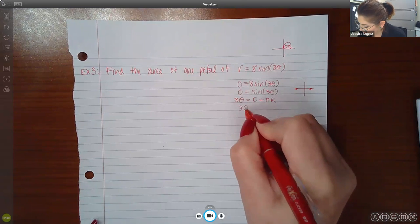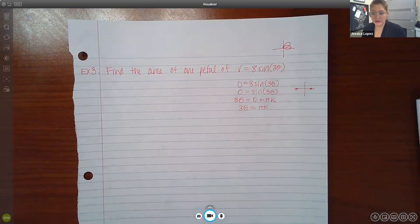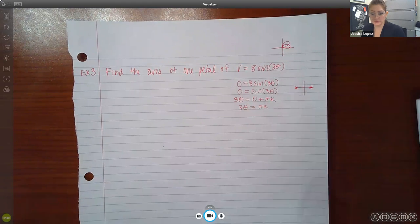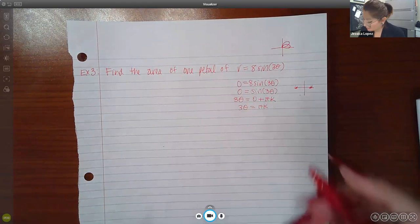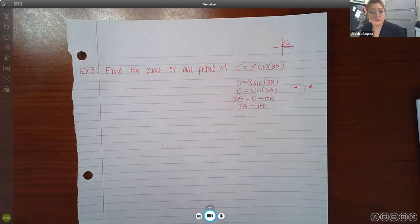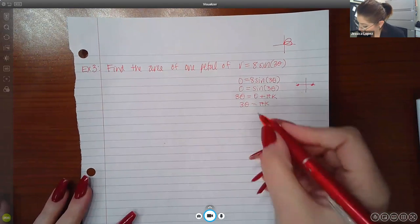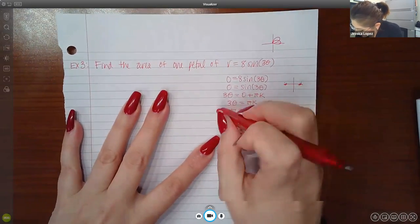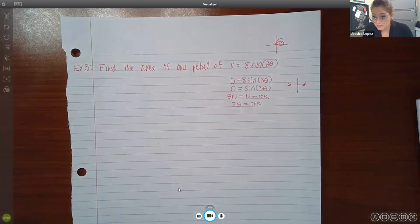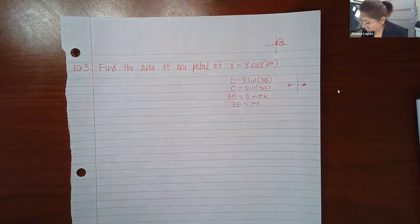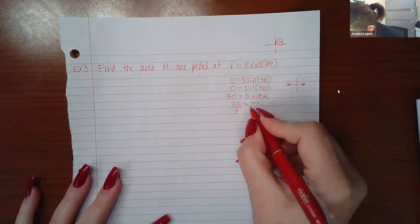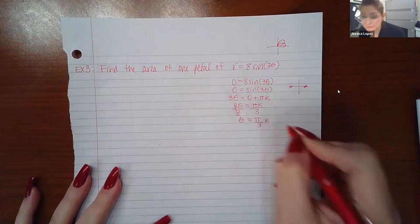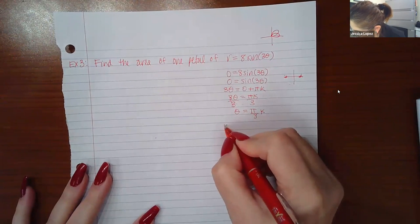We're basically just plugging in zero for r and trying to figure out when that happens. So if I divide both sides by eight, I get this equation. And if I look at my unit circle, when is the y value equal to zero here and here? So that means that three theta would have to equal zero, which is the first one, plus pi k. It can also just say three theta equals pi k. Zero is the first one, and then pi, and then two pi, three pi, four pi, so on and so forth. And k goes from zero, one, two, three, four, five, so on and so forth. So I do have to figure out what theta is. If I divide both sides by three, I get pi over three times k.